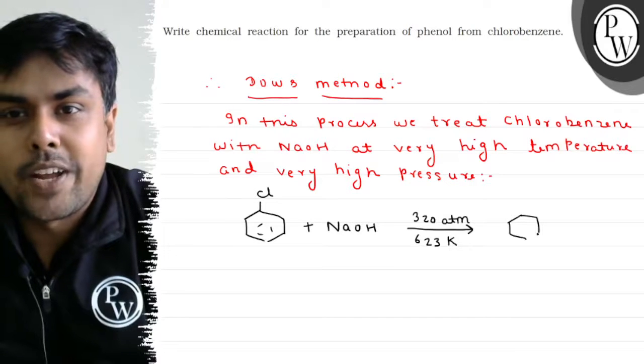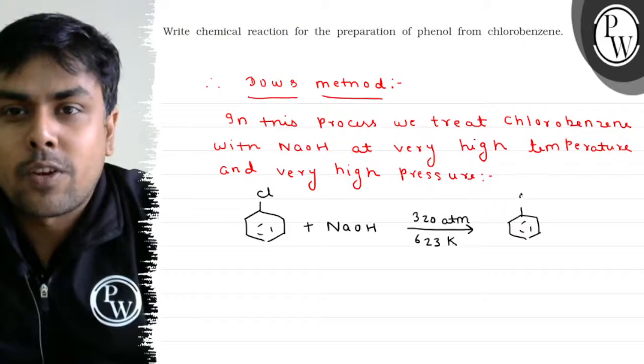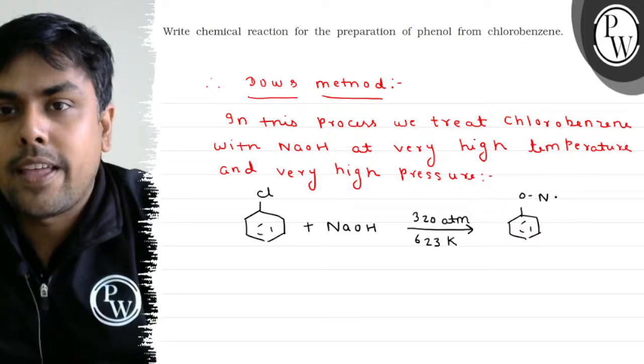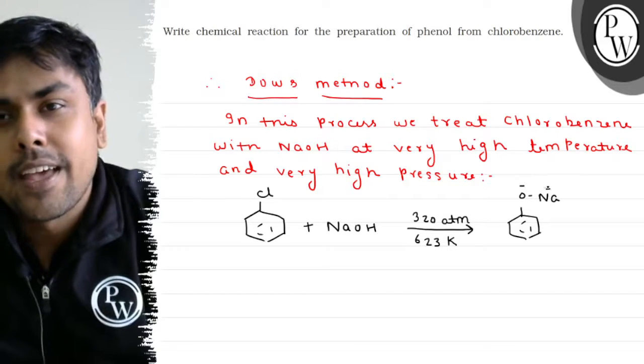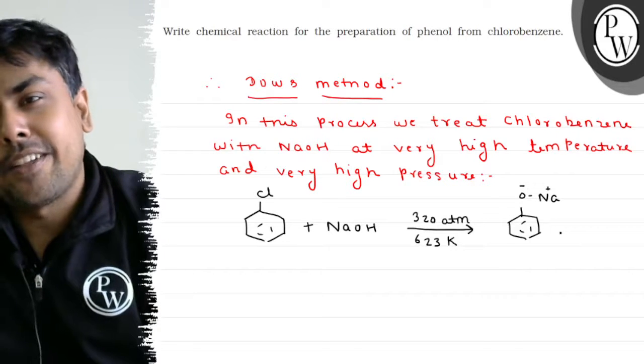Now in the first step what we get is phenoxide, phenoxide with NaOH charge, NaOH positive.